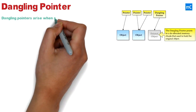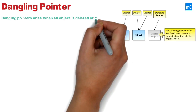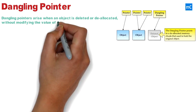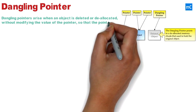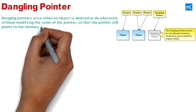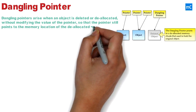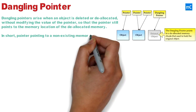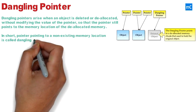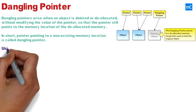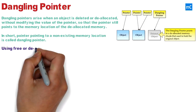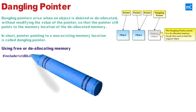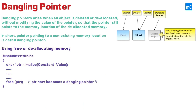A dangling pointer arises when an object is deleted or deallocated without modifying the value of the pointer, so that the pointer still points to the memory location of the deallocated memory. In short, a pointer pointing to a non-existing memory location is called a dangling pointer. There are two ways a dangling pointer can be created: first, using free or deallocating memory.